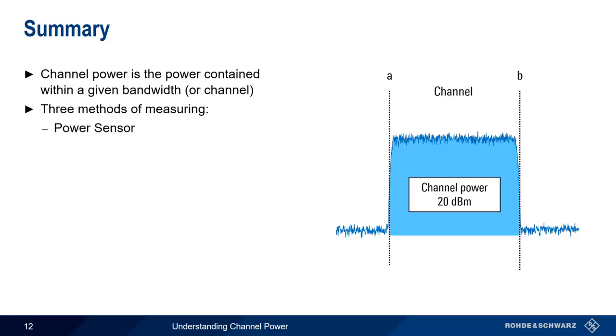There are three main methods for measuring channel power: using an RF power sensor, using a spectrum analyzer in zero span mode, or using the so-called integrated bandwidth method, in which a spectrum analyzer uses a narrow resolution bandwidth to integrate the power within a channel.